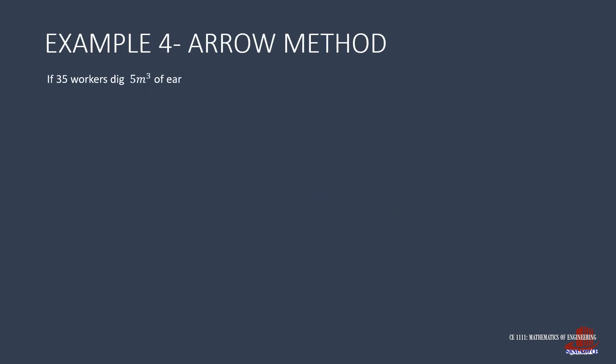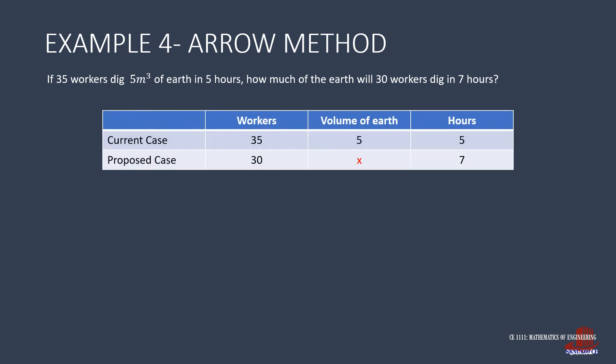Example 4 discusses the ability of 35 workers to dig 5 cubic meters volume of earth in 5 hours. What would be the volume of earth 30 workers can dig in 7 hours? The quantities involved in the problem are number of workers, volume of earth dug, and number of hours. Analyze each quantity as more number of workers will dig more volume of earth, a direct proportion. Next, longer hours of work will also be yielding more volume of earth displaced, another direct proportion.